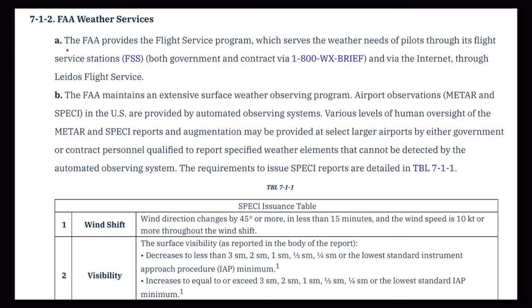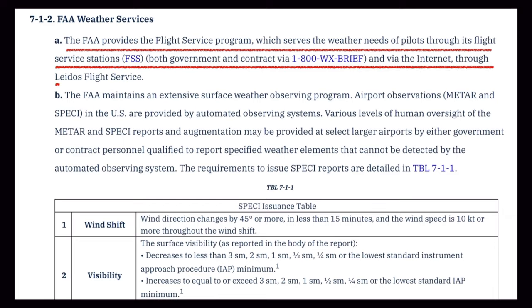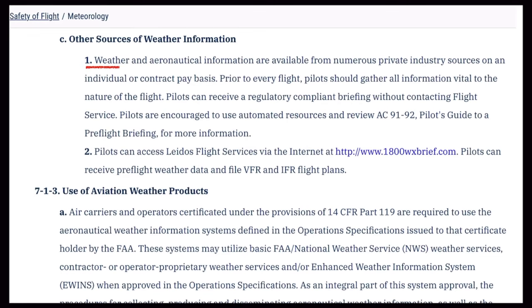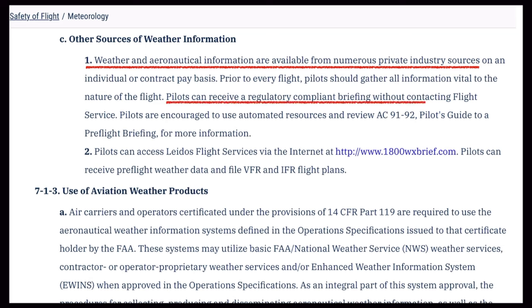According to the AIM, Chapter 7, Section 1-2A, the FAA provides the flight service program to serve the weather needs of pilots through the flight service stations and through the Leidos Flight Service. Chapter 7, Section 1-2C notes that weather and aeronautical information are also available from numerous private industry sources, and that pilots can receive regulatory compliant briefings without contacting flight service.